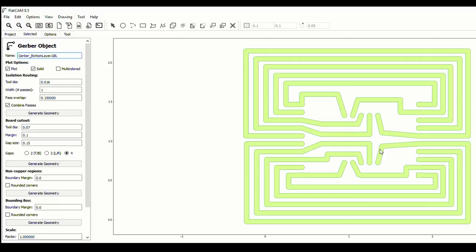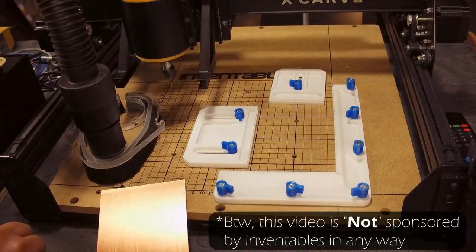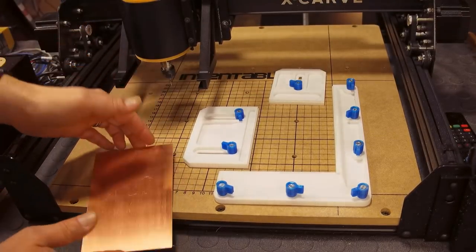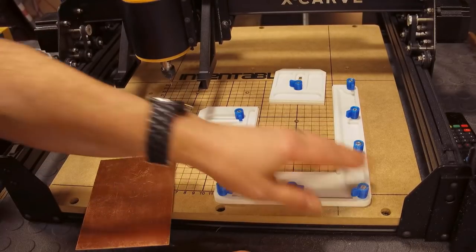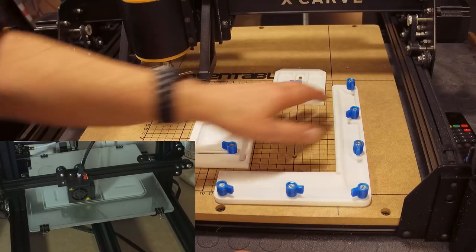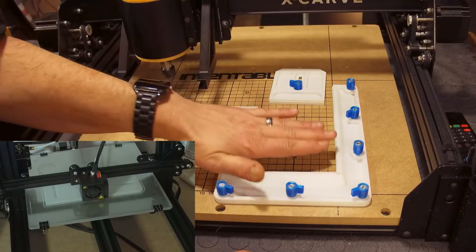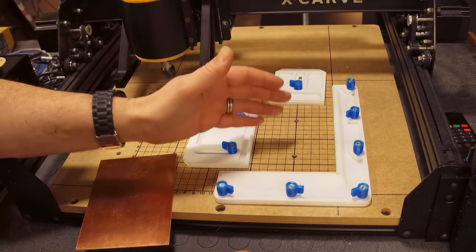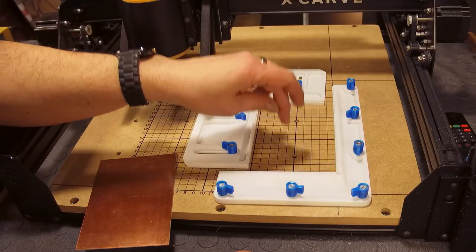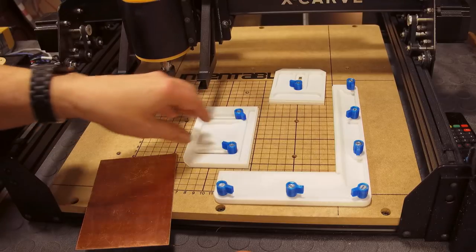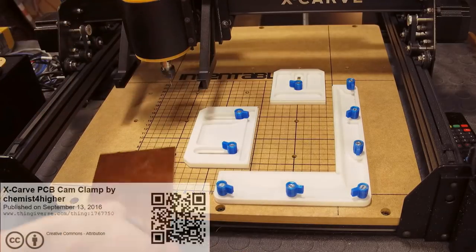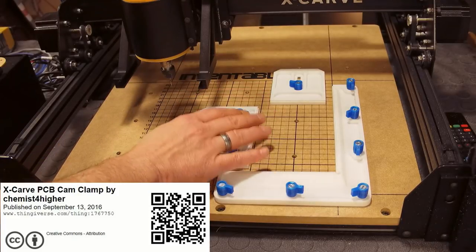Let me show you how I set up the X-Carve really quick. This is the dust shoe, I'm not gonna use it this time because I want you guys to see what's going on. This is the board we're gonna use. As you see here I have this clamp system. This clamp system I found on Thingiverse, the guy who designed this did a really great job. You have this L shape here and there's a little lip here so the board sits just above the actual X-Carve.